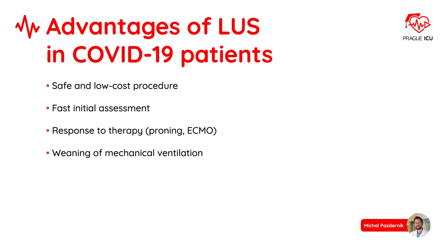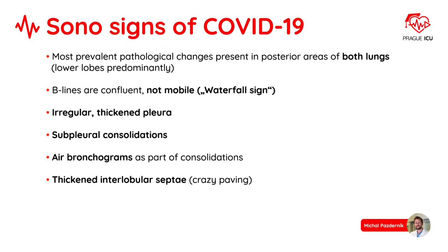Lung ultrasound became extremely useful particularly in the current COVID era. It is a safe and low-cost procedure that provides fast initial assessment. It can help us assess the response to therapy in proning, ECMO patients, or during weaning of mechanical ventilation. Typical signs of COVID on lung ultrasound include: pathological changes predominantly in posterior areas of both lungs, lower lobes. B-lines are confluent and not mobile. Irregular thick pleura is present, also subpleural consolidations, air bronchograms, and thickened interlobular septae — the so-called crazy paving.